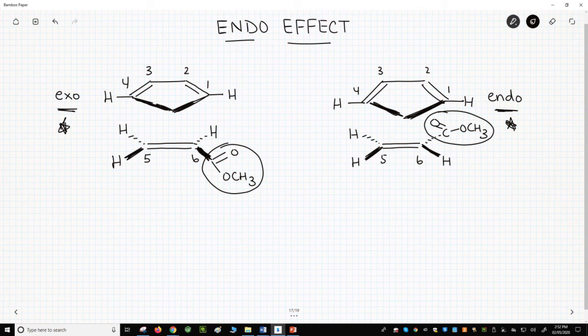By sterics, the endo product is disfavored. However, putting the pi system of the EWG near the pi system of the diene gives unexpected stabilization.